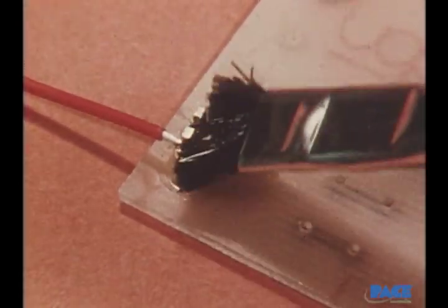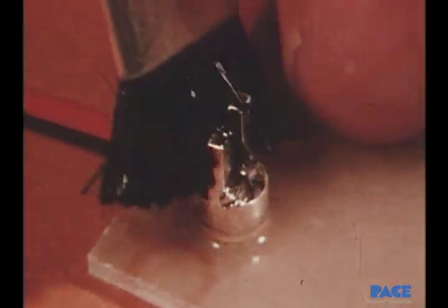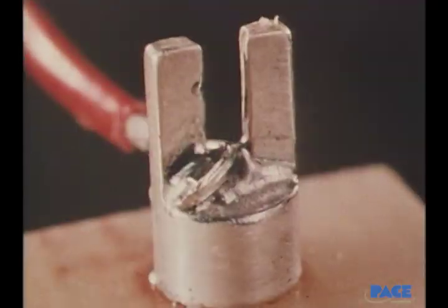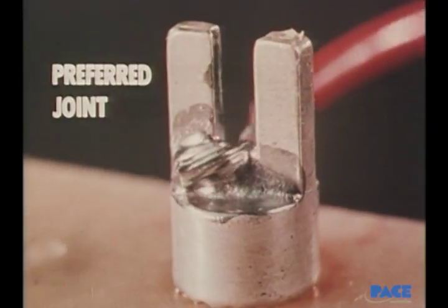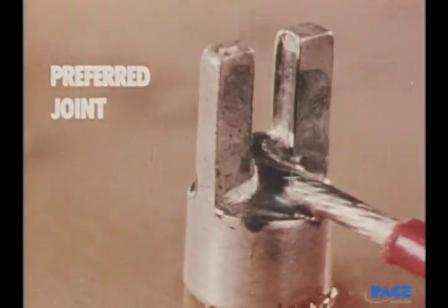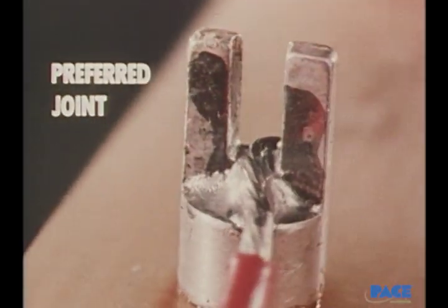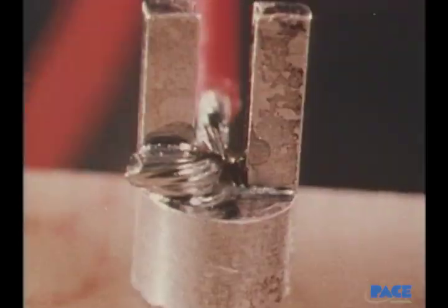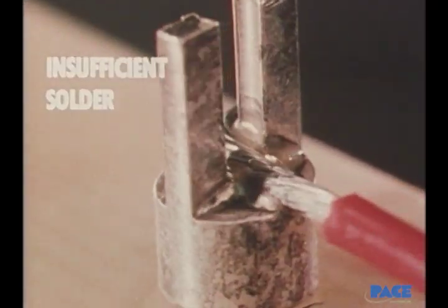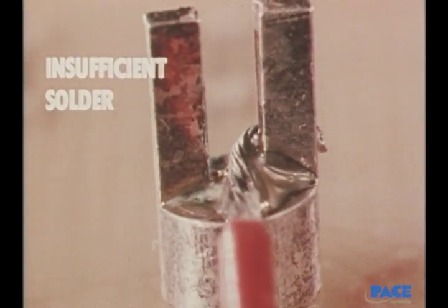The joint is then cleaned. These are the three surfaces that should be in contact with the wire when it's properly wrapped around the terminal. The joint is clean, smooth, and bright with an undisturbed surface and a concave fillet exists between conductor and terminal. For comparison, here is a joint that is unacceptable because it has insufficient solder and the end of the lead extends beyond the diameter of the terminal.